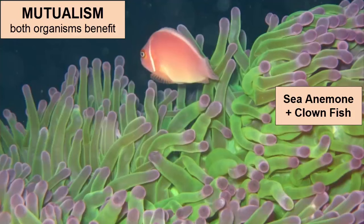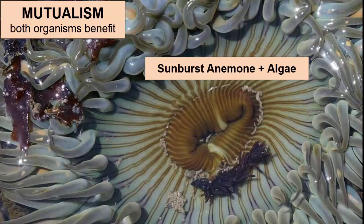Another example of Mutualism happens inside this sunburst anemone on the Pacific coast. Its green color comes from tiny photosynthesizing algae that live within it and get their nutrients from the waste of the anemone. The anemone in turn feeds off the garden of algae as needed to supplement its own food source.